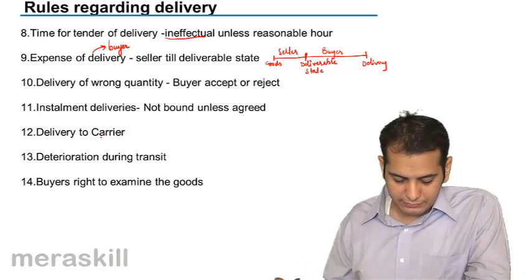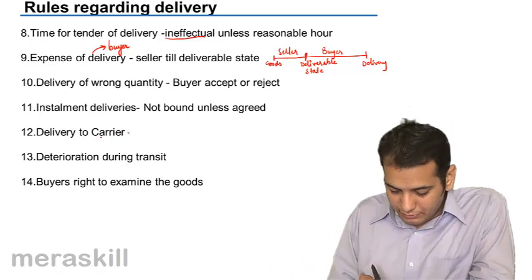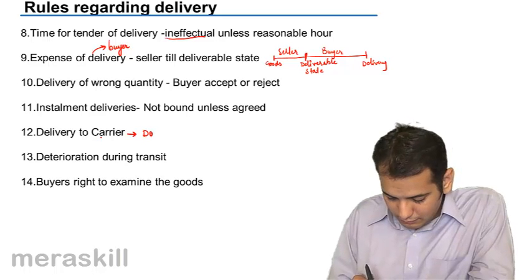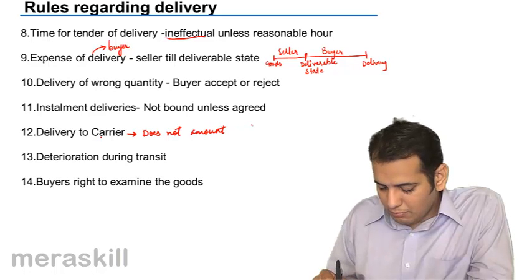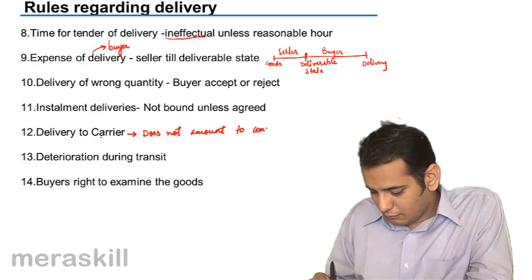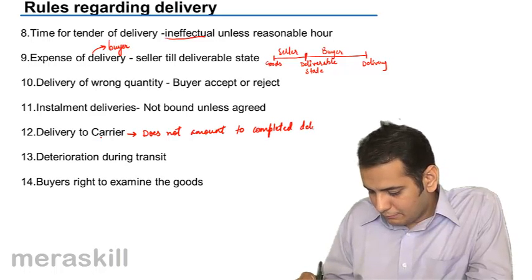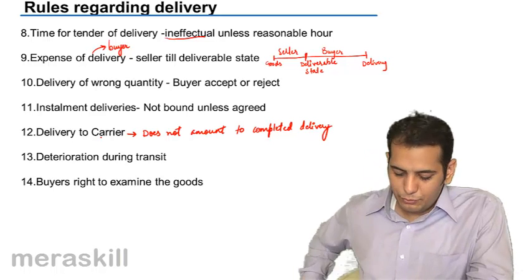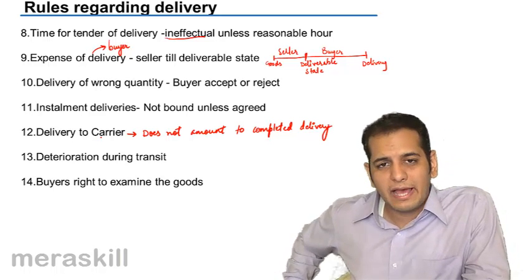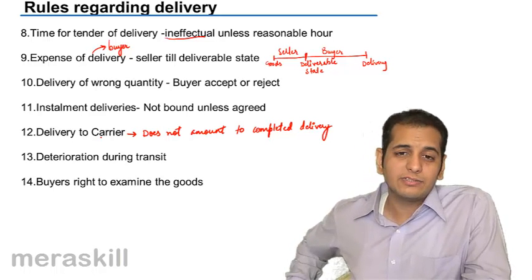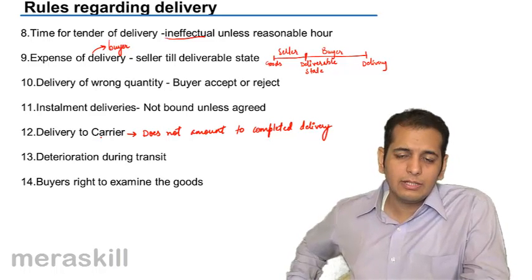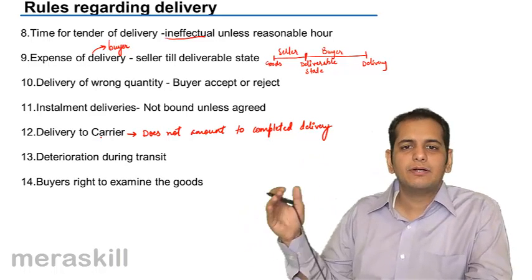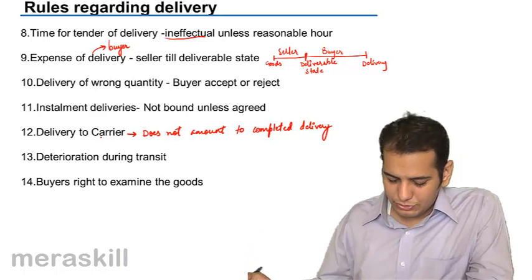Delivery to carrier does not amount to completed delivery. Even if you give the goods to a carrier to transport them to the buyer, the delivery is not considered complete. The goods are still in transit, and delivery is only complete when the goods actually reach the buyer.